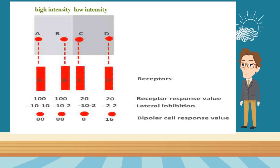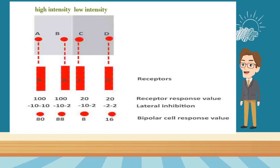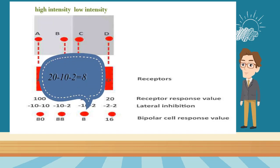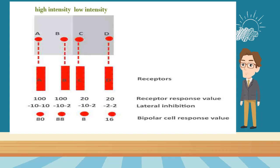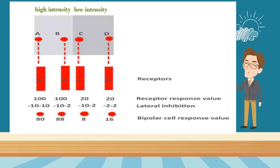Neuron C is adjacent to B and D. The final response value of neuron D is 8. 18 and 8 are different response values. So, perceptually, B and C are of different brightness.